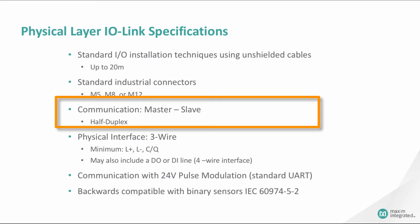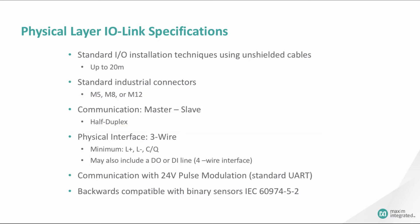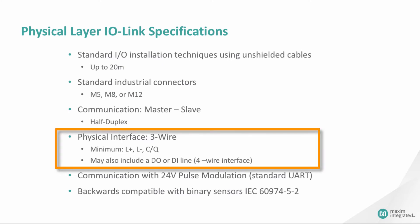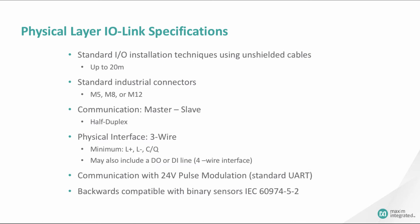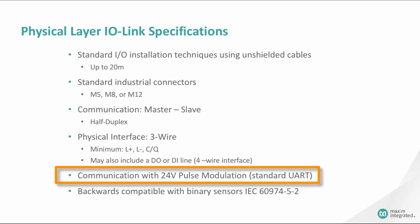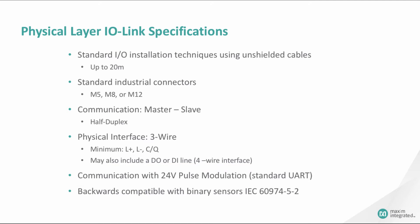IO-Link communication is between one master and one device — a sensor or actuator. Communication is binary and half-duplex. It requires a three-wire interface: supply, data, and ground. The supply range in an IO-Link system is 20 to 30 volts for the master, and 18 to 30 volts for the device. Communication is with 24-volt pulse modulation.